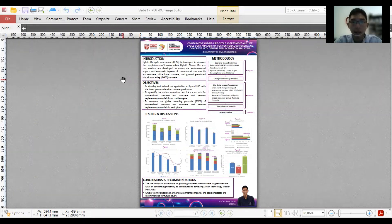Good morning, everyone. I'm Cheng Yawei with metric number 196053. The topic I'm going to talk about today is Comparative Hybrid Lifecycle Assessment and Lifecycle Cost Analysis on Conventional Concrete and Concrete with Cement Replacement in Malaysia.